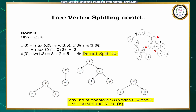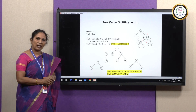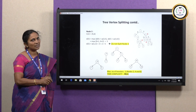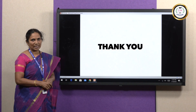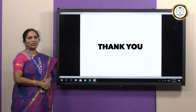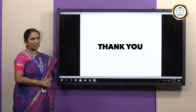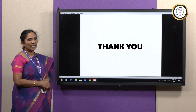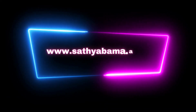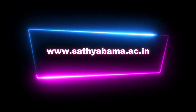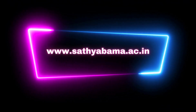Finally, the maximum number of boosters we have to keep is 3, at node 2, node 4, and node 6. The overall time complexity of this algorithm is Θ(n). That is about the tree vertex splitting problem. We will see the algorithm implementation of this problem in the next video session. Thank you.